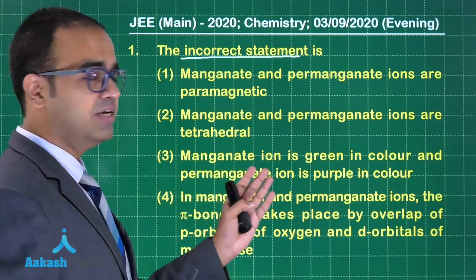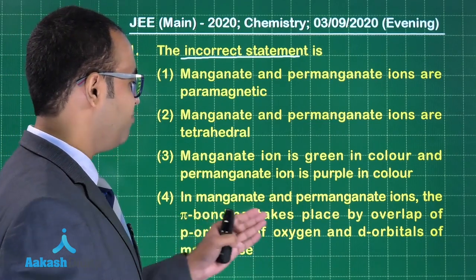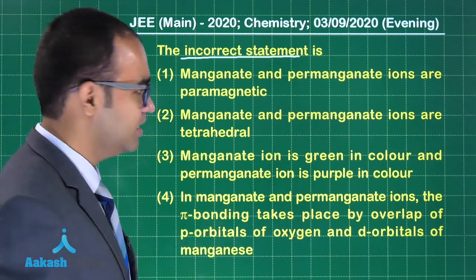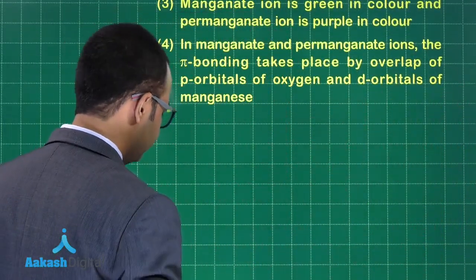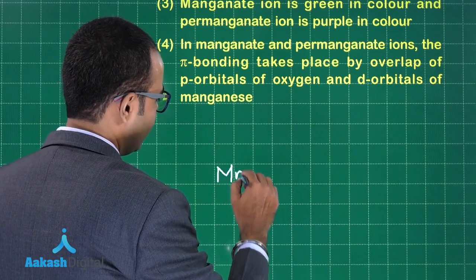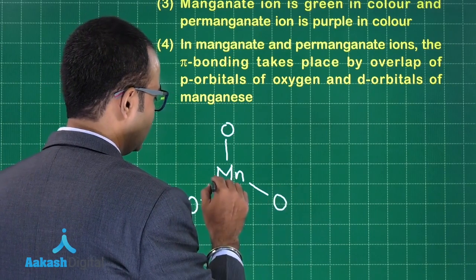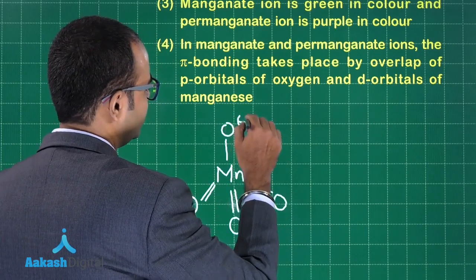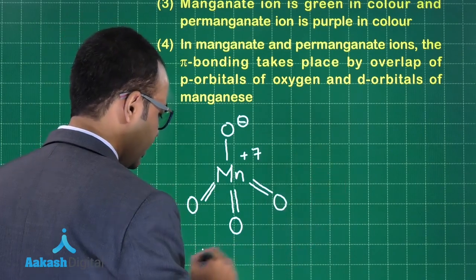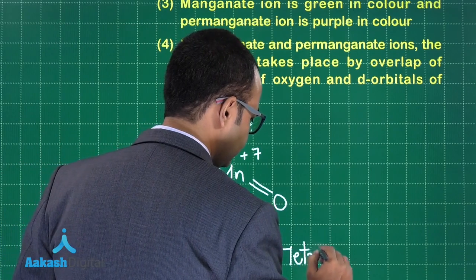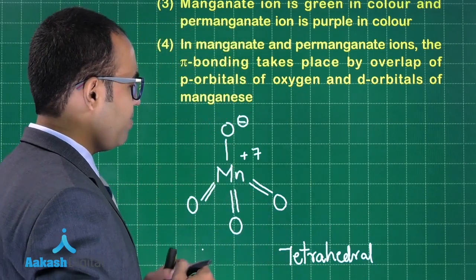Manganate ion is green in color and permanganate ion is purple in color. In manganate and permanganate ions, the pi bonding takes place by overlap of P orbitals of oxygen and D orbitals of manganese. In permanganate ion, Mn is tetrahedrally bonded to four oxygens. There are three pi bonds and one oxygen carries a charge of minus one. Oxidation state of Mn is plus seven and the structure is tetrahedral.